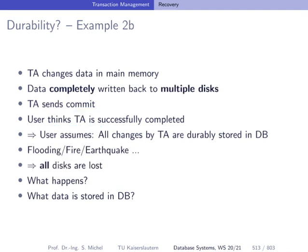Now assume the transaction changes data and it is completely written back to multiple disks. The transaction sends commit, the user thinks everything is fine. But then there's a flooding, fire, earthquake — whatever — and all disks are lost. Again, the user assumes data is stored persistently in the database, but it's not.